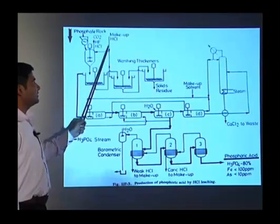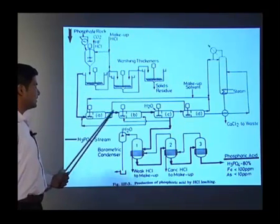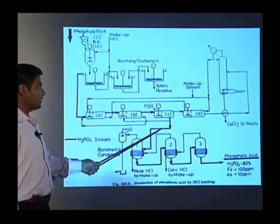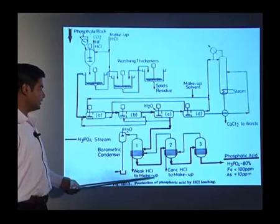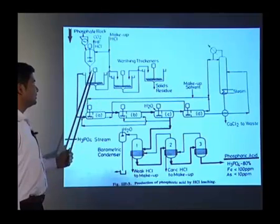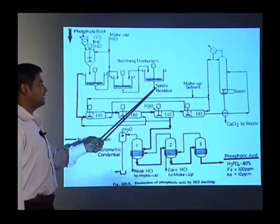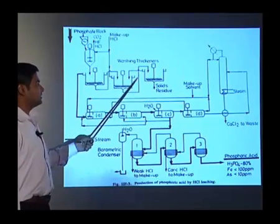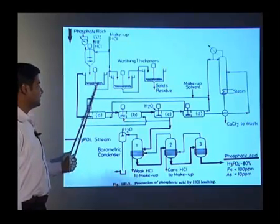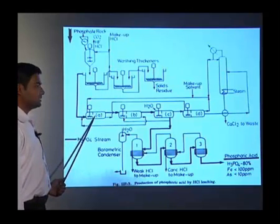We can add the HCl for the makeup. If you see the dark line, it will show how the phosphoric acid is going. This will give the phosphoric acid stream. When the mixture is digested and we are using the solvent to recover the phosphoric acid, then it will go to the mixer settlers.